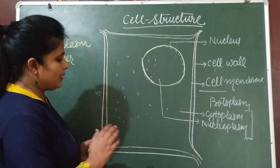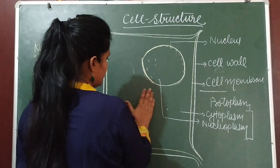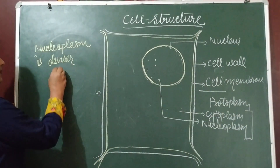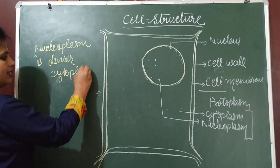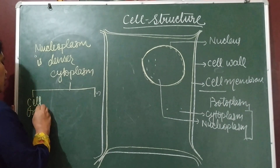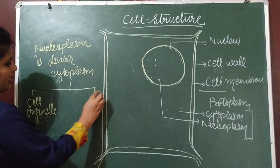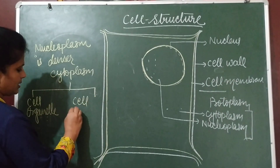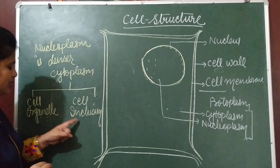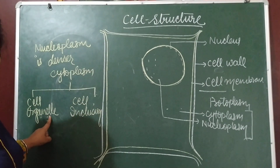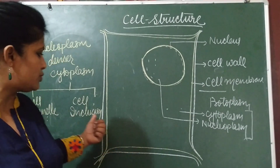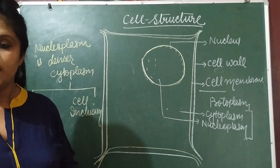Inside the cytoplasma there are two things: cell organelles and cell inclusions. Cell organelles are the small parts or organs of the cell. The basic difference between them is that cell organelles are the living part of the cell, while cell inclusions are the non-living part of the cell.